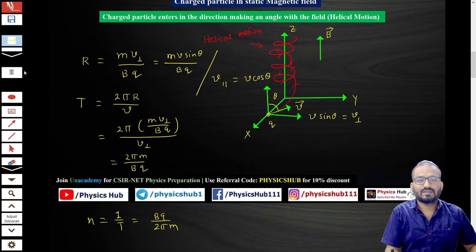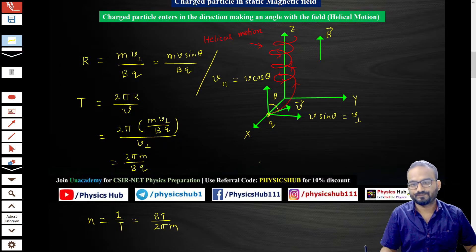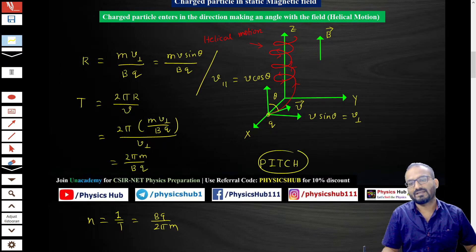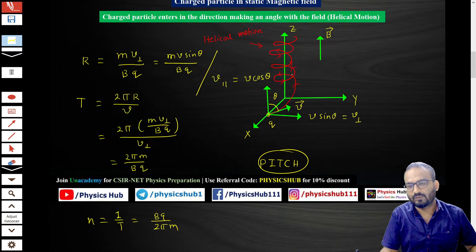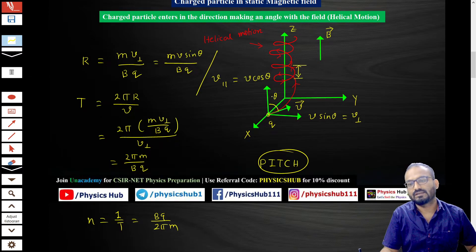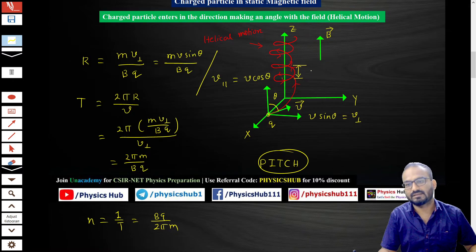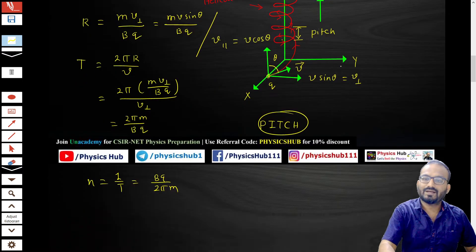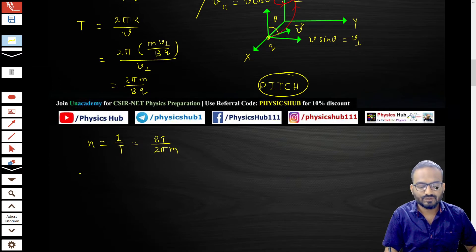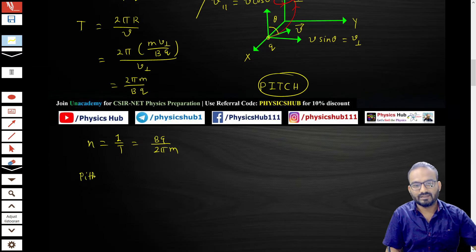Now there is a term called pitch. Looking at the helical trajectory: the particle moves upward while making circular loops, so it covers a linear distance between successive circular loops. This linear distance is called the pitch.